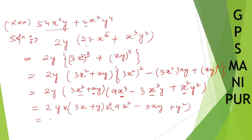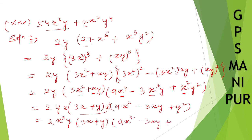So the final answer is 2x³y(3x + y)(9x² − 3xy + y²). I hope the answer is correct.